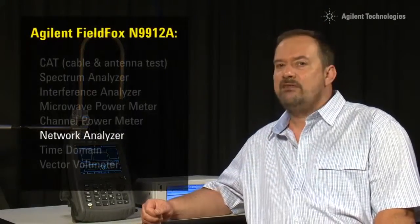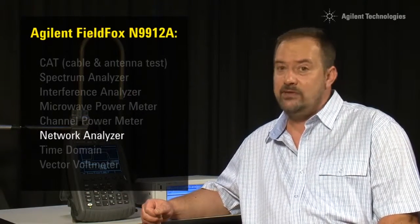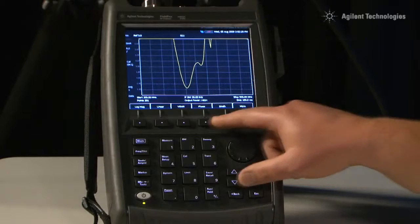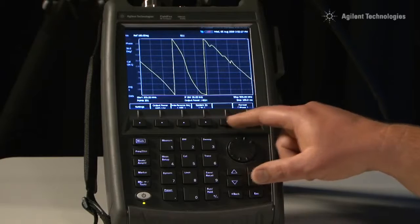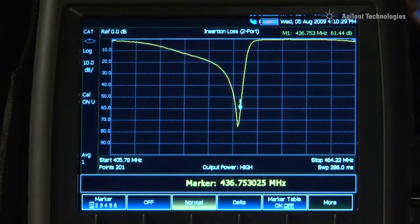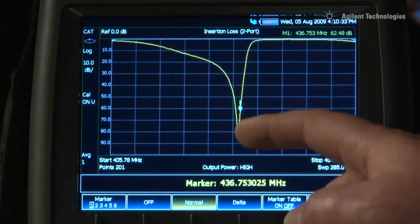If you need to make more advanced device measurements than just the standard cable and antenna test that is built into every FieldFox, you can order the network analyzer option. Not only does this give you extremely accurate return loss measurements of both magnitude and phase, but we can also measure the transmission loss or gain of filters, amplifiers and cables, in fact any 50 ohm device.